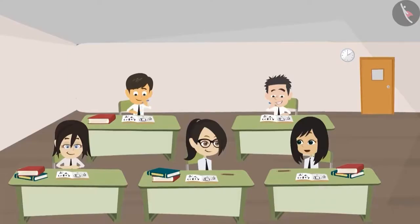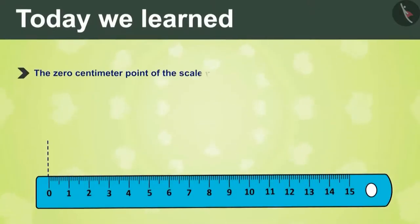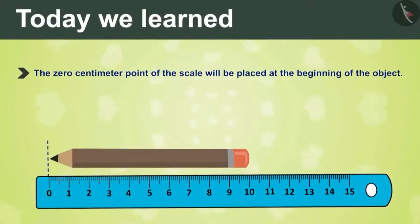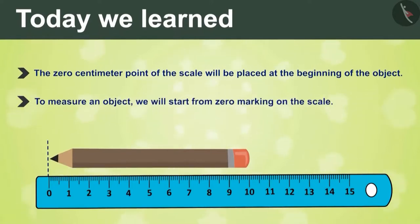We need to remember these two rules while measuring any object. The 0 centimeter point of the scale will be placed at the beginning of the object, and to measure an object, we will start from zero marking on the scale.